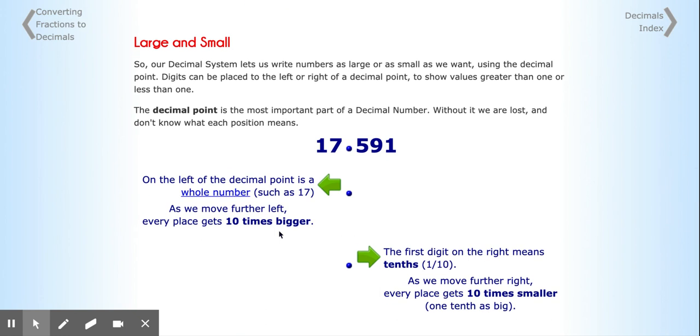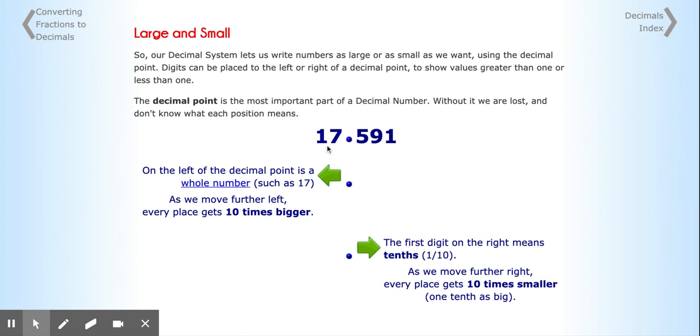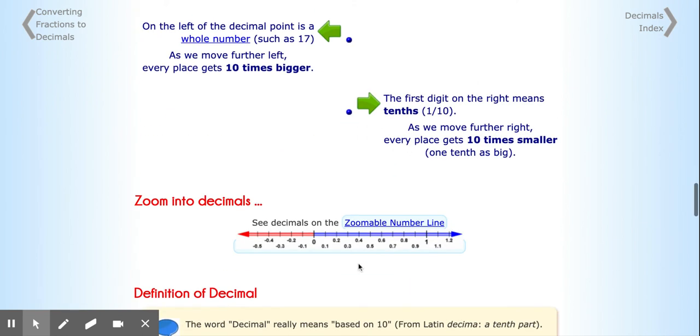Let's move down here. Same thing here. This is exactly what we're talking. 17 and 591. And the left of the decimal point is the whole number. That's 17. On the right is the fraction or the decimal part here.